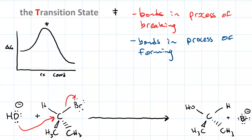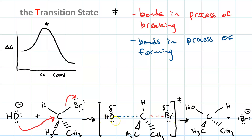What does the transition state look like? The dashed blue line represents the bond in the process of forming between carbon and oxygen; the dashed red line represents the bond in the process of breaking between carbon and bromine — they're dashed because they're not fully formed or broken. The hydroxyl group is negative in the reactants and neutral in the products, so it carries a partial negative charge; the bromide is neutral in reactants and negative in products, so it also carries a partial negative charge.